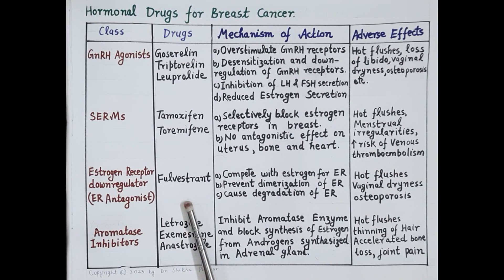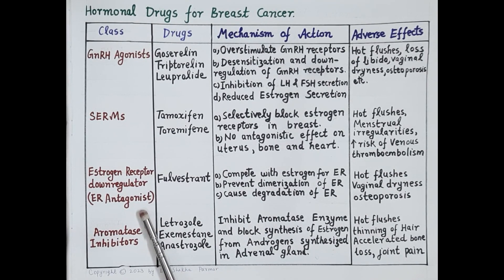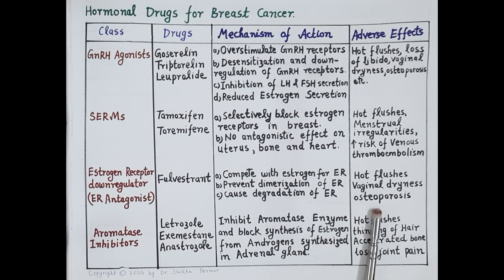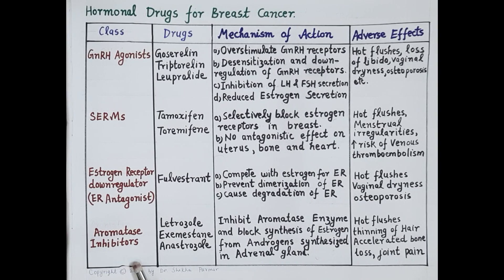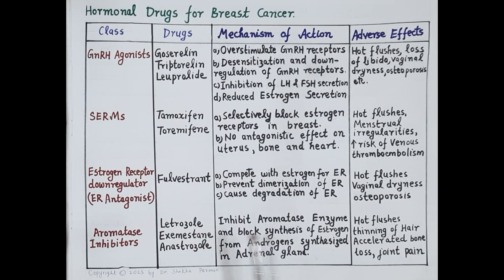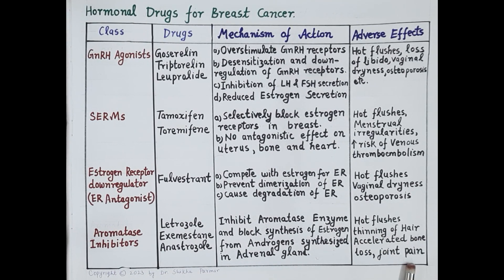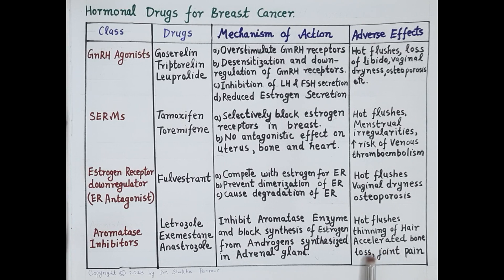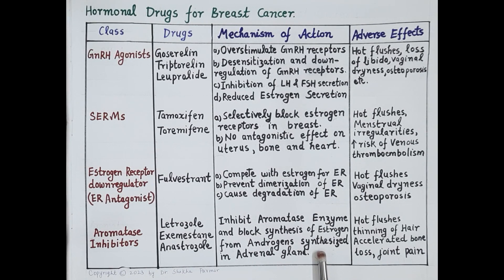Fulvestrant, an estrogen receptor down-regulator, produces similar adverse effects due to reduced estrogen action — hot flushes, vaginal dryness, and osteoporosis. Aromatase inhibitors like letrozole produce adverse effects including hot flushes, thinning of hair, joint pain, and accelerated bone loss. This concludes the pharmacology of hormonal drugs for breast cancer.